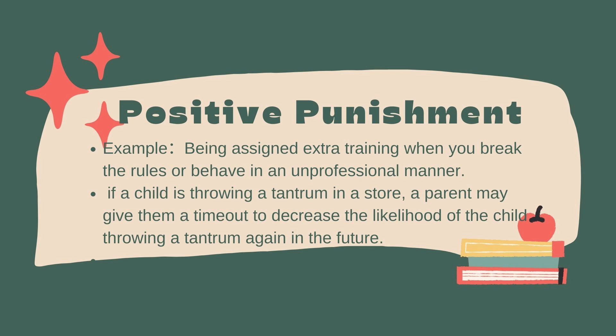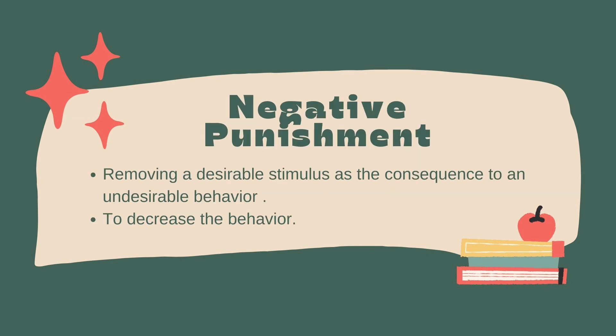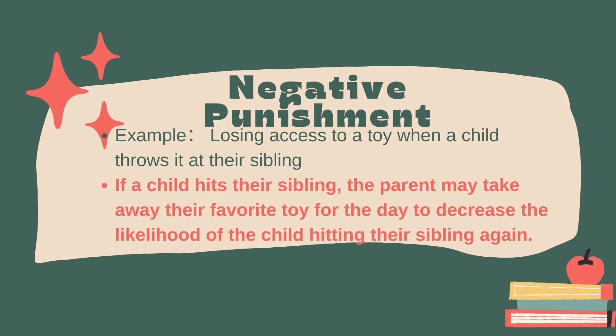Another example is being assigned extra training when you break the rules or behave unprofessionally. Negative punishment, on the other hand, is when a desirable stimulus such as a toy or a privilege is removed to decrease the likelihood of an undesired behavior. For instance, if a child hits their sibling, the parent may take away their favorite toy for the day. Both positive and negative punishment can have unintended consequences — positive punishment can lead to fear or resentment, while negative punishment can lead to feelings of sadness or disappointment. Therefore, it is important to use punishment sparingly and appropriately.